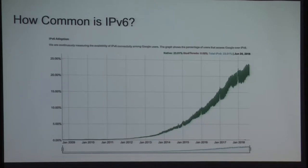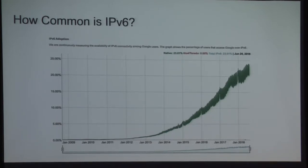Here we have a chart of the percentage of users who have connected to Google over IPv6, spanning one decade. On the left is 2009 with very little IPv6 traffic; it started increasing in 2013 and 2014, and now we're at close to 25%. This is only users connecting to Google, but it's a good indication that IPv6 adoption is growing and will continue to grow. As security practitioners, it's something we need to think more and more about.